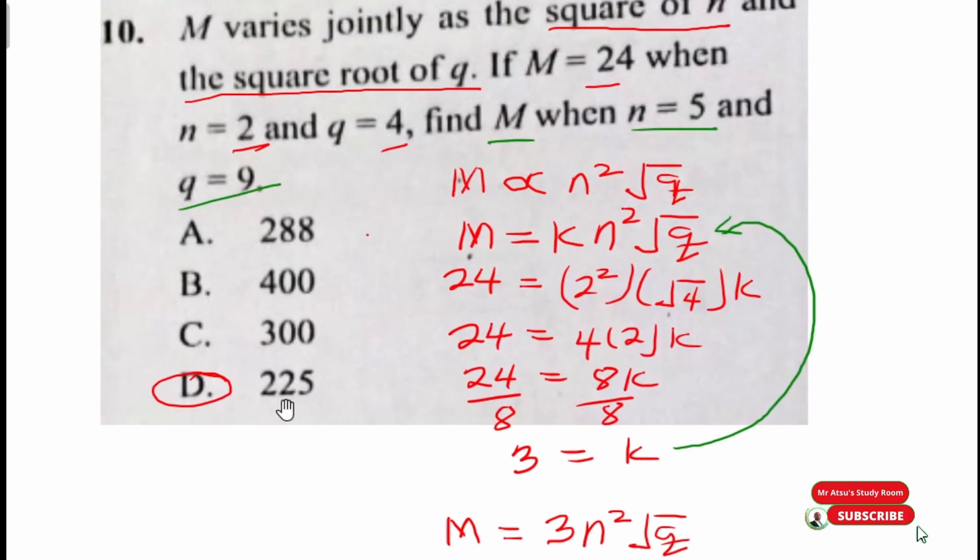So M will be equal to 225 when n equals 5 and q equals 9. And remember we wrote the proportionality statement after which we solve for the value of k which is the constant of proportionality. And to find that we need to know the value for each of them except the k, then I have to find the k, and after that we substitute it into it. Let's now get on to question 14.